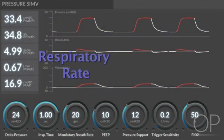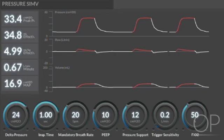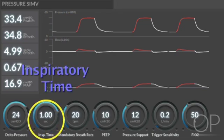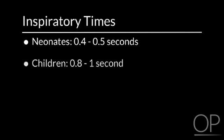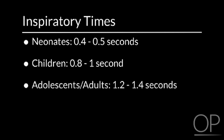There is the respiratory rate. Often there is a rate set on the ventilator, but there may also be the rate that the patient is actually breathing. We may set the ventilator at 20, but the patient is breathing 30, so it's important to recognize that. There is also the inspiratory time, which is set mostly according to the age of the patient. Most neonates may have an inspiratory time of 0.4 or 0.5 seconds, children sometimes 0.8 to 1 second, and older children and adults normally 1.2 to 1.4 seconds.